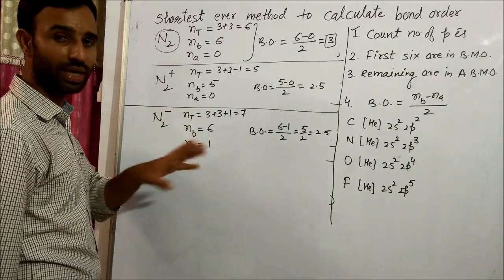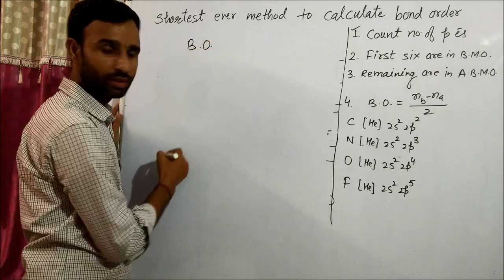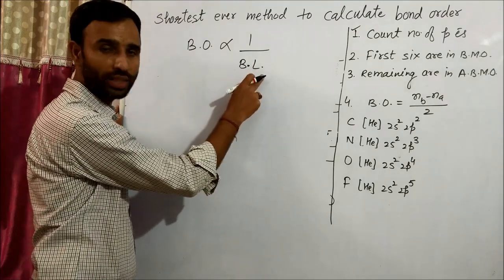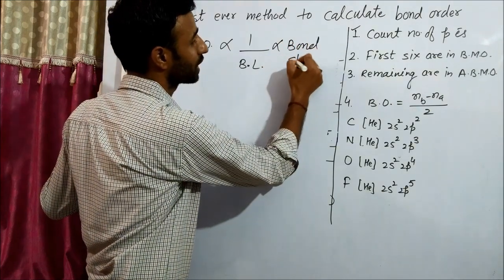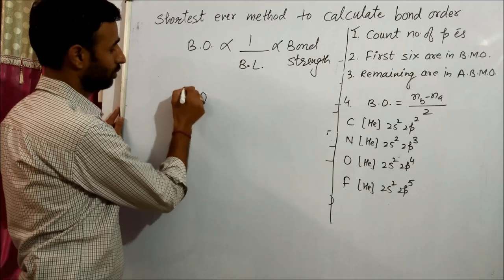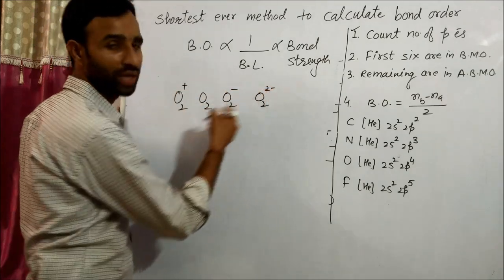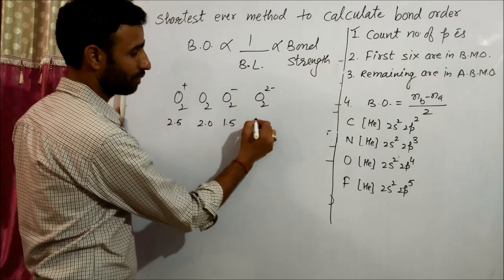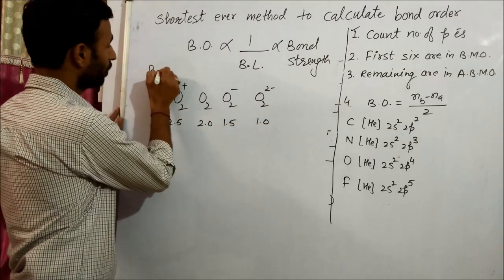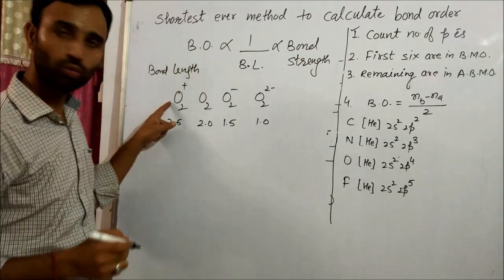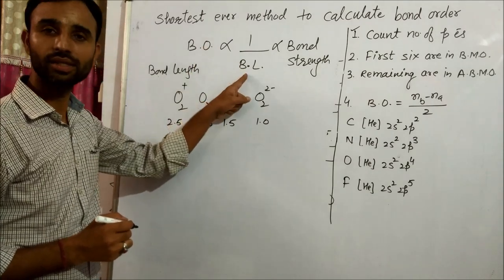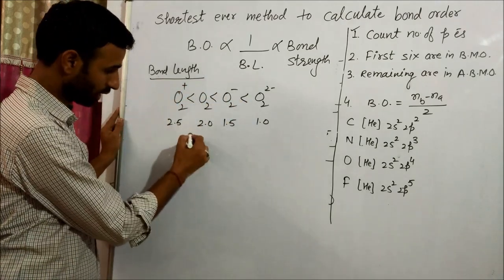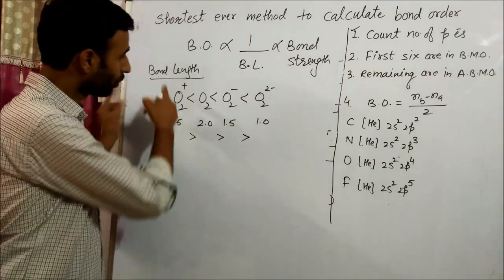Now you should know that bond order is inversely proportional to bond length, and directly proportional to bond strength. For example, the bond orders for O2+, O2, O2-, and O2(2-) are 2.5, 2.0, 1.5, and 1.0 respectively. Since O2+ has the maximum bond order, it has the minimum bond length. The order of bond length is the reverse of the order of bond order.